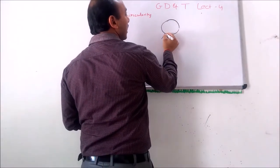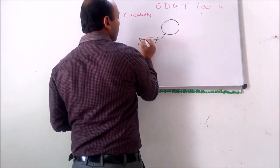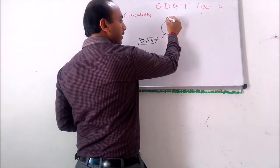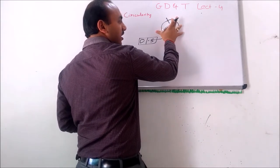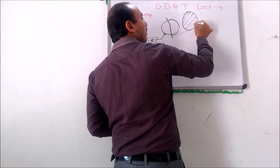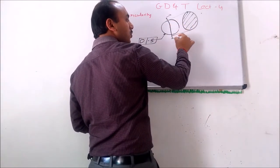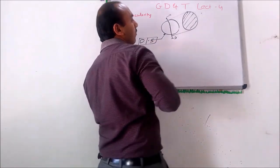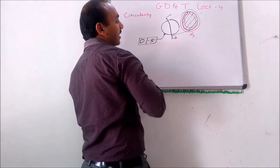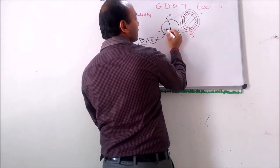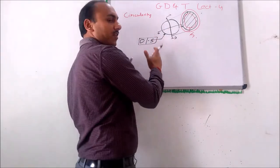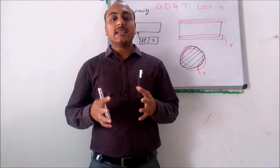Circularity can also be applied on a sphere. Suppose a circularity of 0.5 is applied on a sphere. It means that any plane passing through its center point that cuts the sphere — all the points on that cross-section should lie within the tolerance zone of 0.5. Similarly, we can cut at many planes passing through the center. This is how circularity is applied on a sphere and what it means.